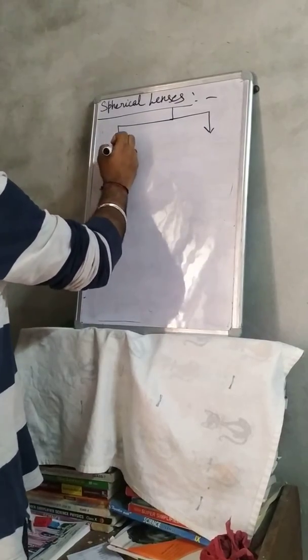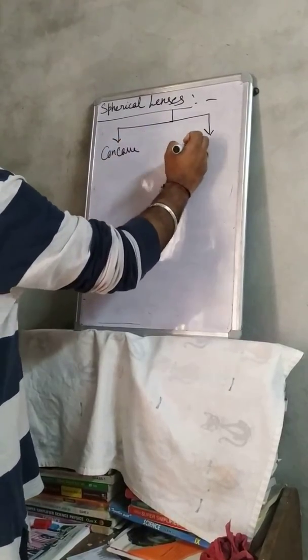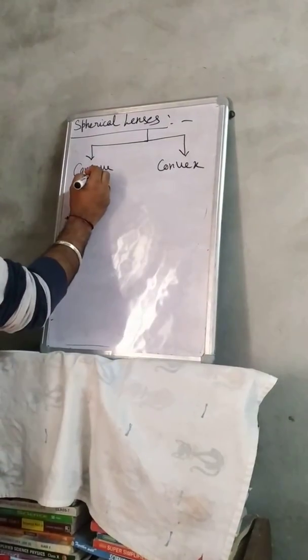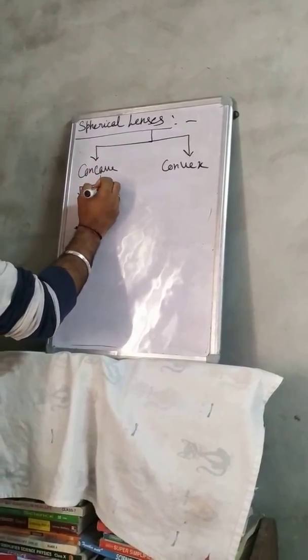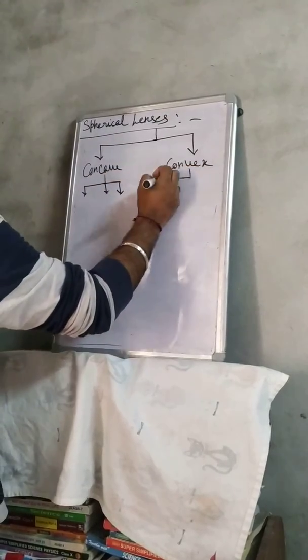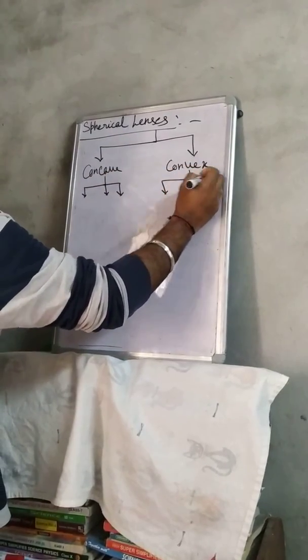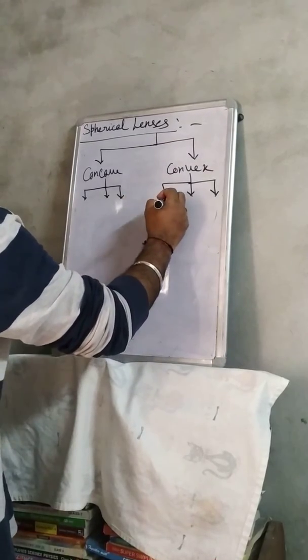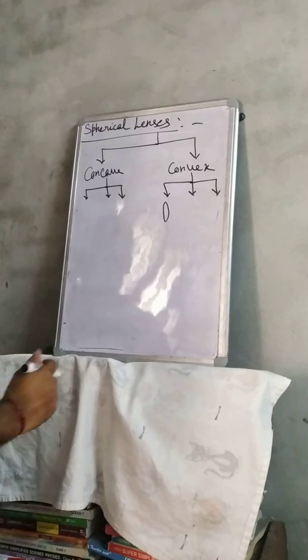One is concave and another is convex. Simply, there are further three types of these lenses. Like this is simple convex lens, thinner from the edges.